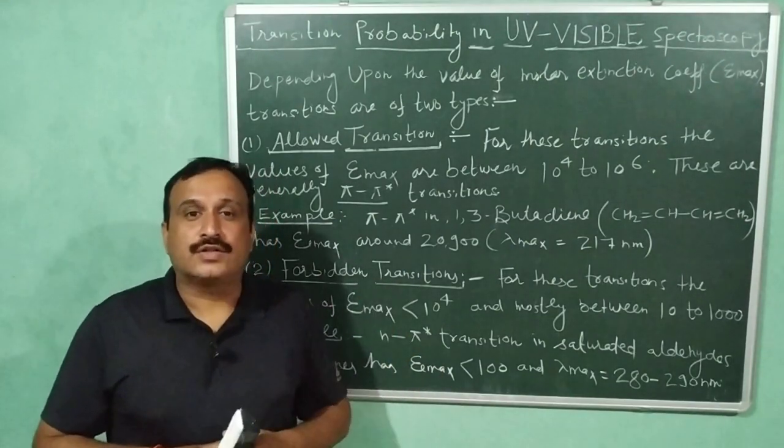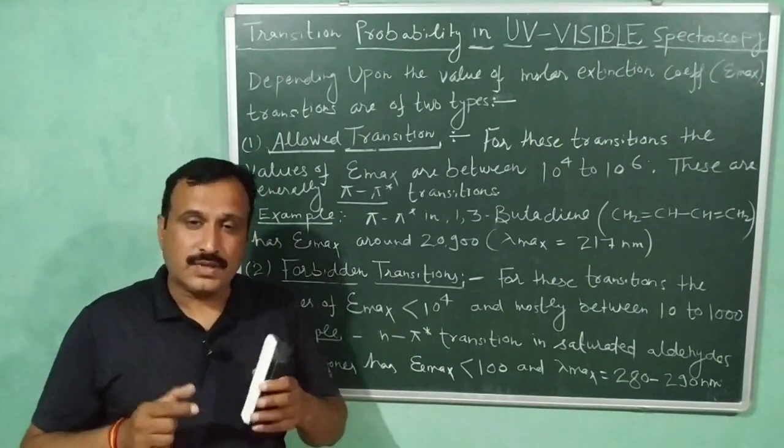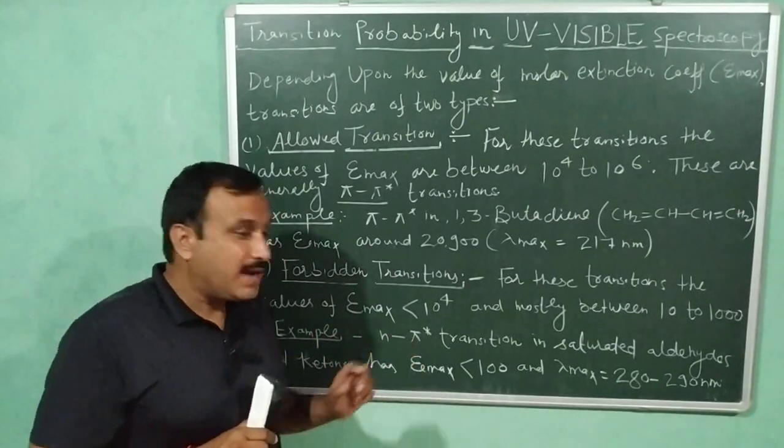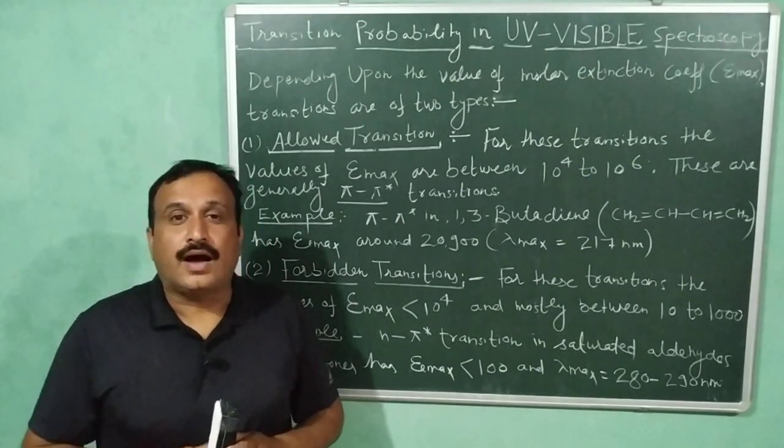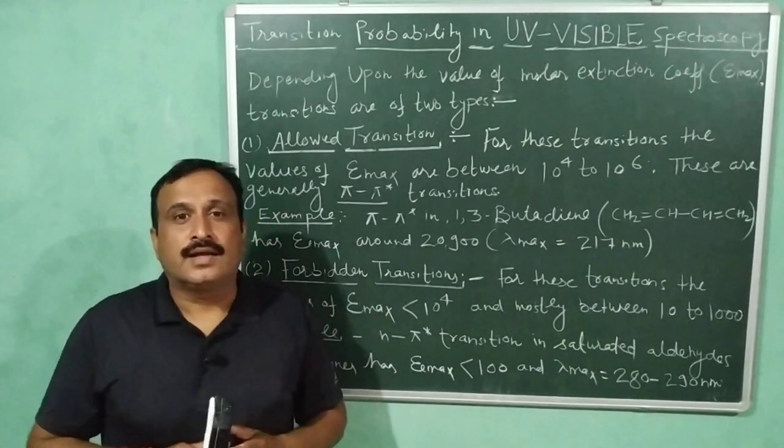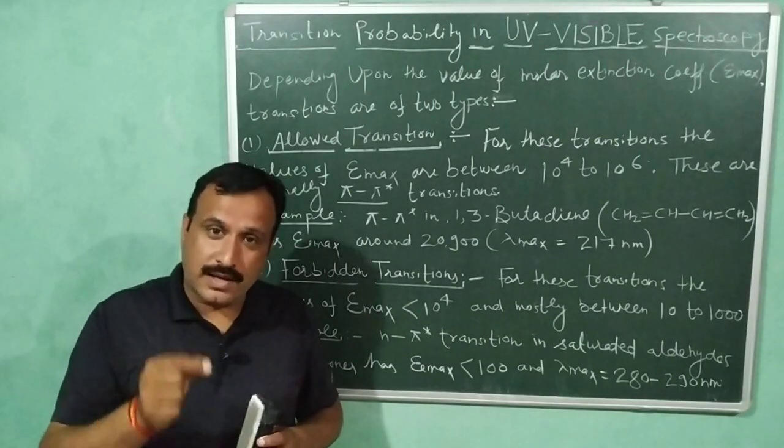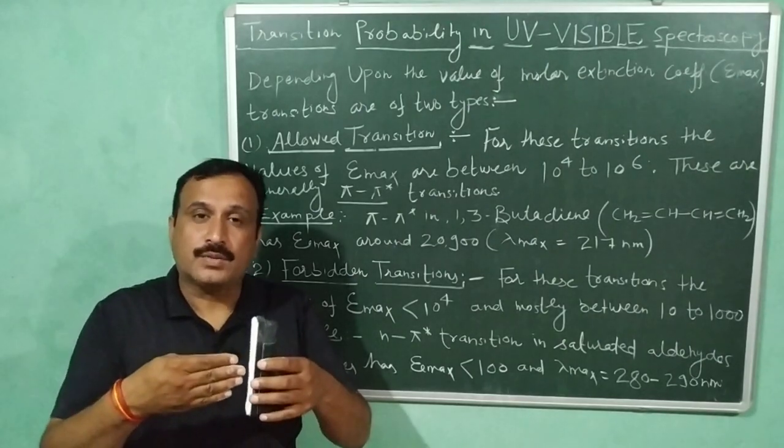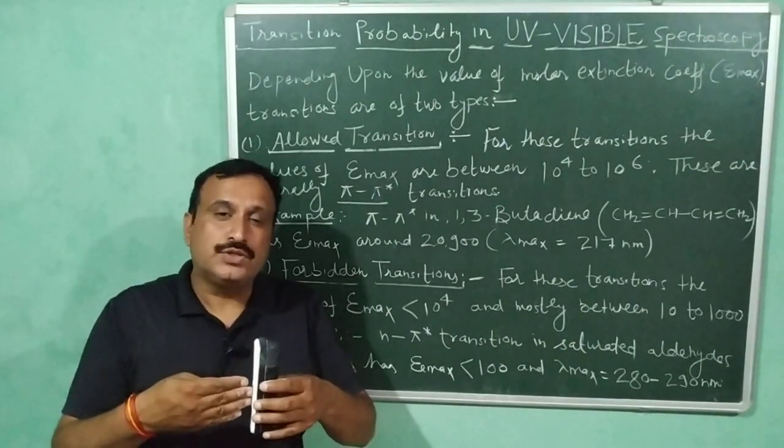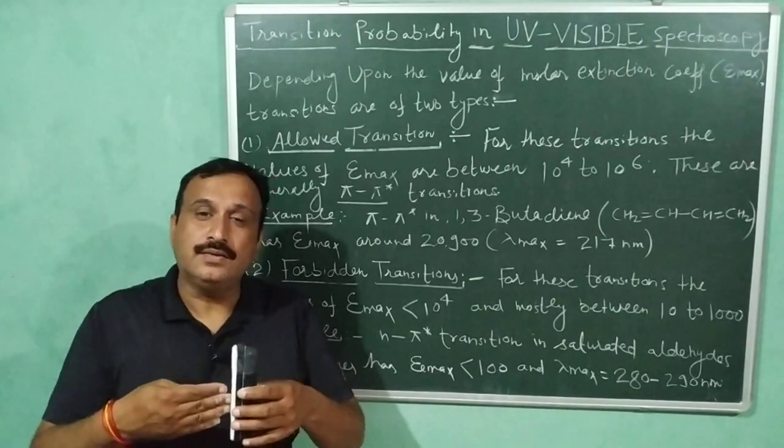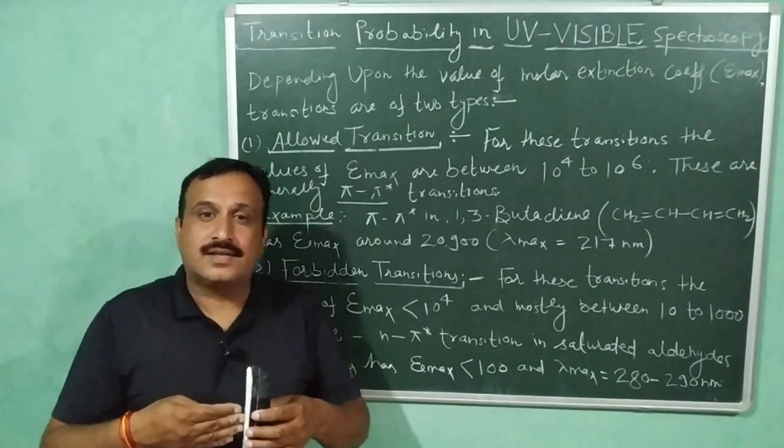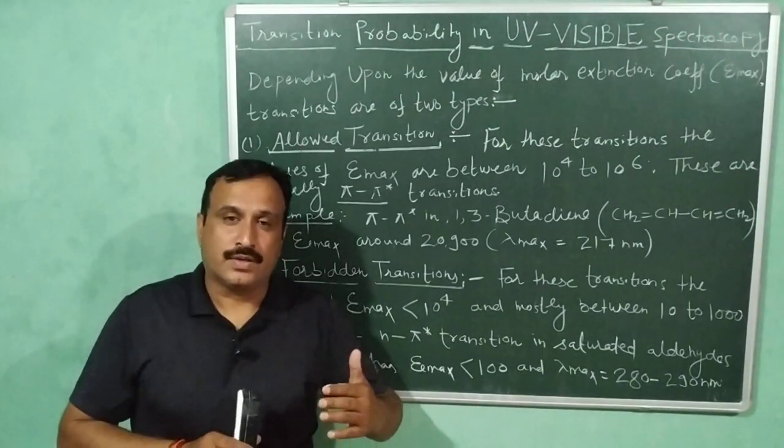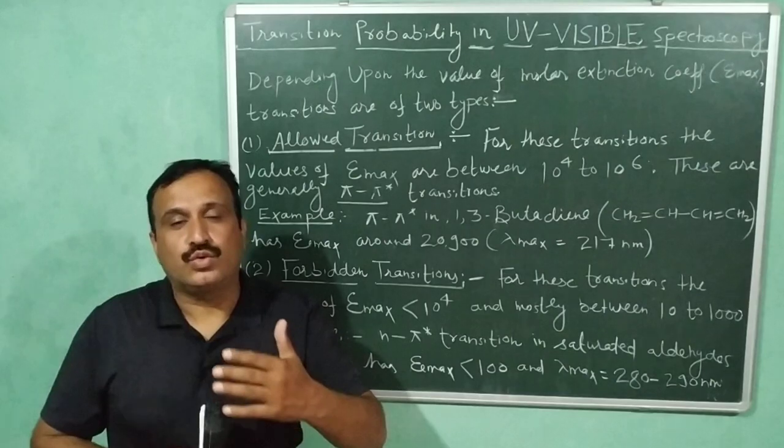The reason for this low probability is that the non-bonding electrons and the π* antibonding molecular orbital are perpendicular to each other. Or we can say that the orbitals containing non-bonding electrons are perpendicular to the π* antibonding molecular orbital. These orbitals are present in different planes, so as a result the overlap is very poor and this transition has a very low probability.